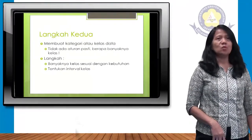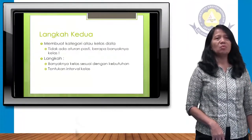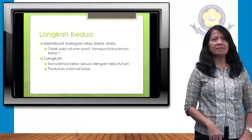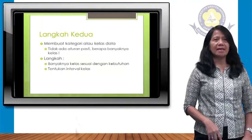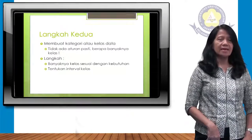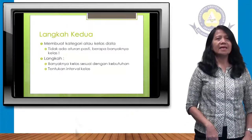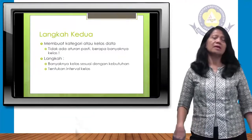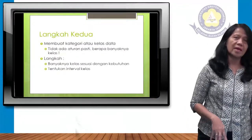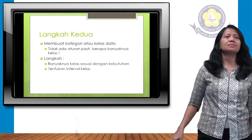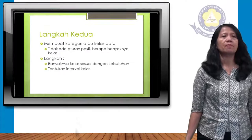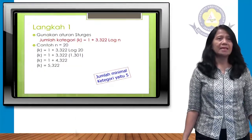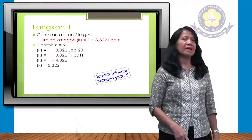Langkah kedua: membuat kategori atau kelas data. Tidak ada aturan pasti berapa banyaknya kelas. Banyaknya kelas disesuaikan dengan kebutuhan, kemudian kita tentukan interval kelas. Untuk menentukan jumlah kelas, gunakan aturan Sturges.